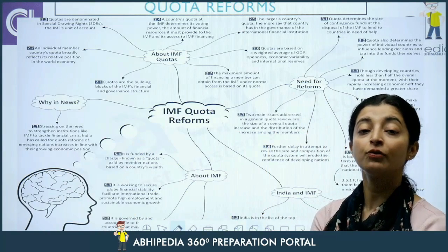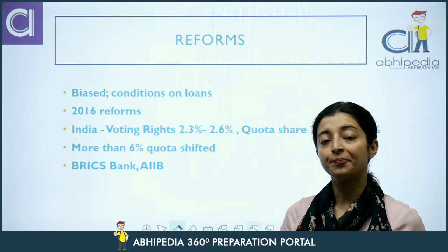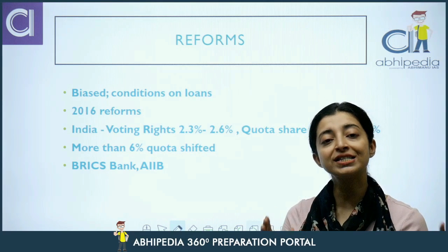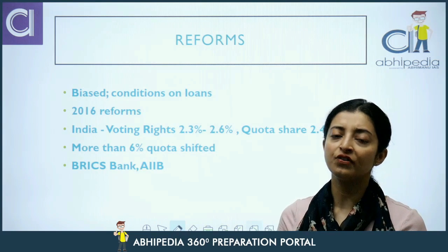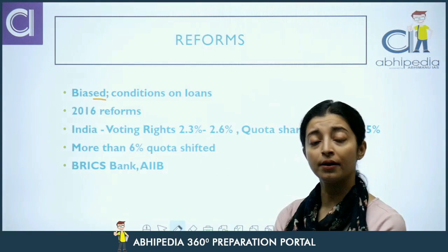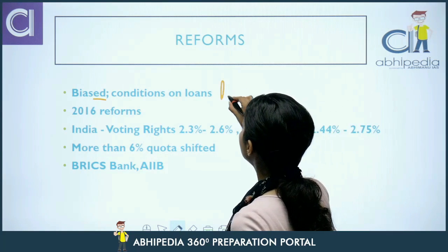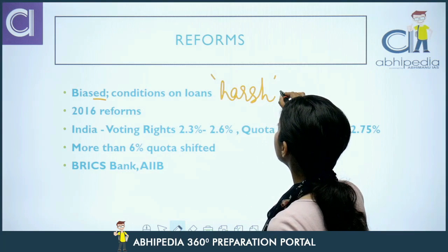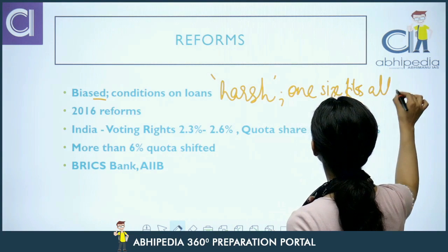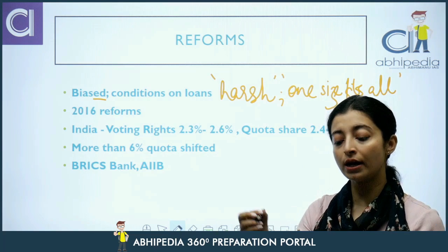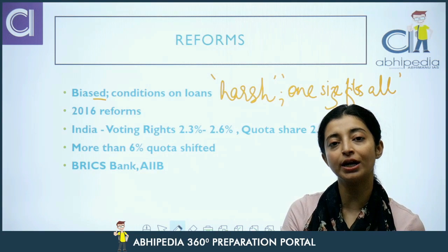Ab IMF reform quotas ki baat karte hain. Reforms kyun chahiye the IMF mein? It is alleged by various developing nations ki IMF aur World Bank jaisi institutions biased hain — woh western nations ko favor karti hain, aur Asian nations ya emerging economies ko favor nahi karti. Aur yeh jo loans dete hain, inki conditions bohot harsh hoti hain. Yeh one-size-fits-all approach ko follow karte hain — country ki specific requirements nahi dekhte. Kahi baar woh reforms counterproductive ho jaate hain, matlab faayda dene ki bajaaye nuqsaan de dete hain countries ko.